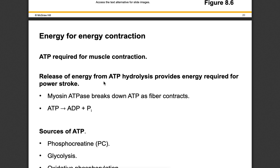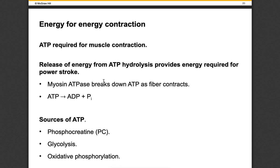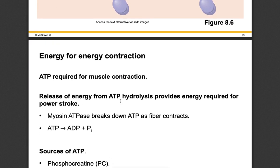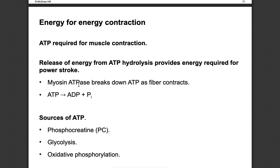ATP is required for the power stroke to occur. If there's a lot of ATP present, these myosin heads are acting and moving very quickly, generating a lot of force. If ATP isn't as available — for example using oxidative phosphorylation to make ATP — those heads are still moving but not as many or not as quickly. The myosin heads are utilizing ATP, breaking it into ADP and inorganic phosphate, and that release of energy allows the myosin head to pull that actin closer to the Z disc.